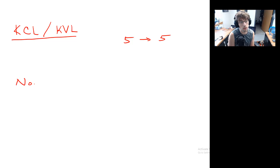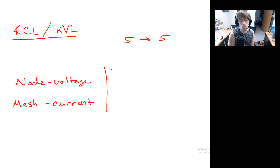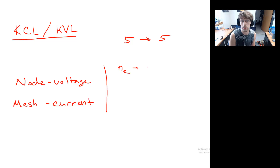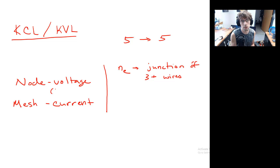The two techniques we're going to talk about this week are node voltage and mesh current. When we say node voltage, we mean essential nodes — what I've been calling NE. An essential node is a junction of three or more wires. Node voltage is a technique that depends on identifying the essential nodes, and it takes advantage of KCL plus Ohm's law.